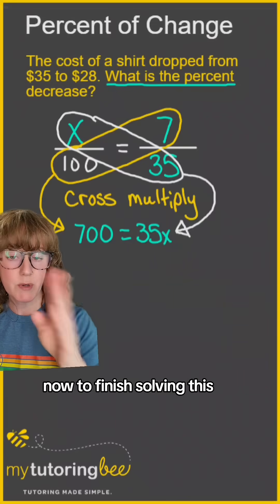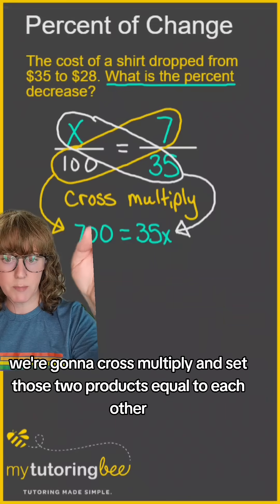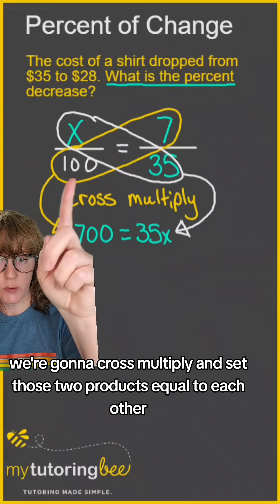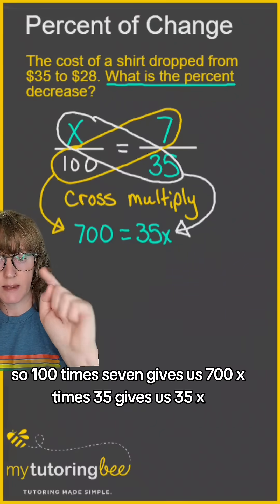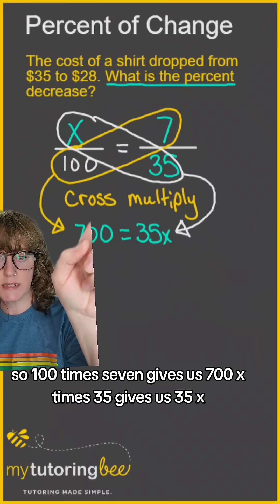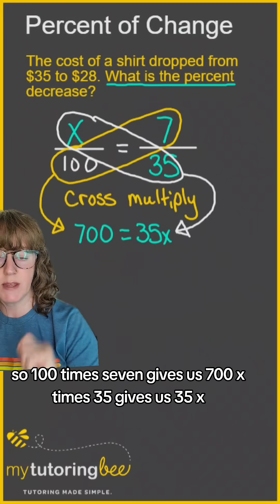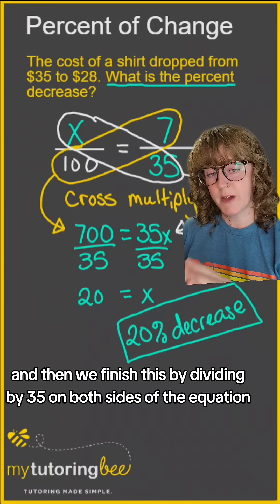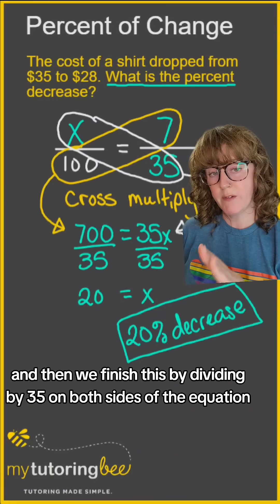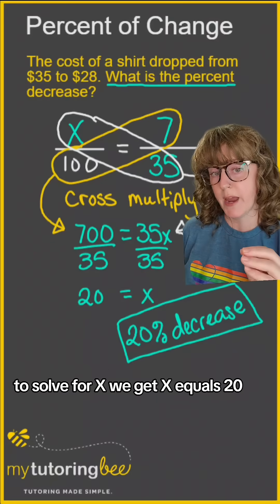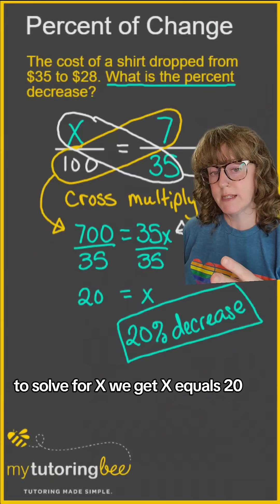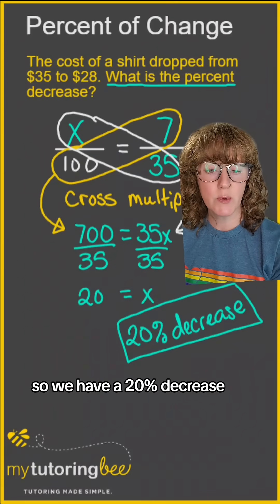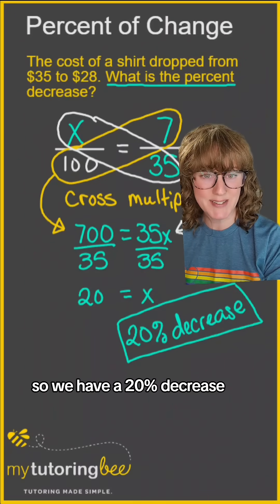To finish solving, we cross-multiply and set the two products equal to each other. 100 times 7 gives us 700, and X times 35 gives us 35X. We then divide both sides by 35 to solve for X, and we get X equals 20. So we have a 20% decrease.